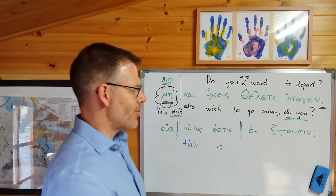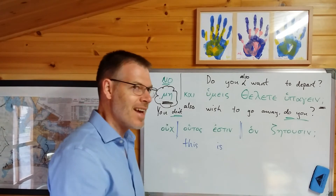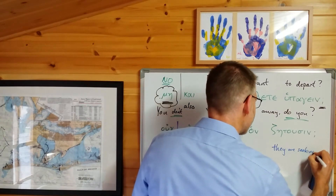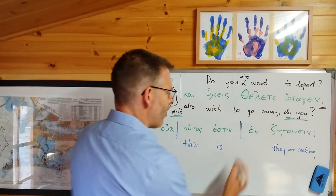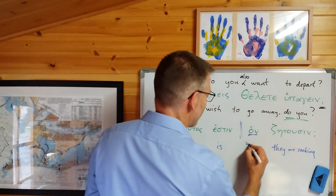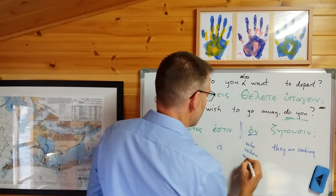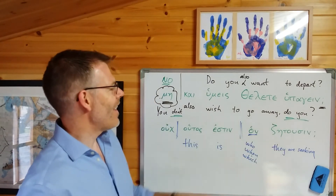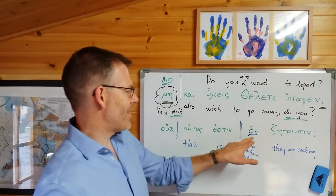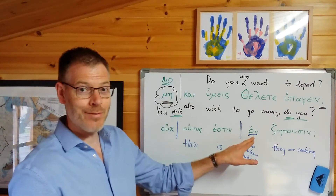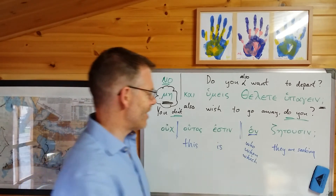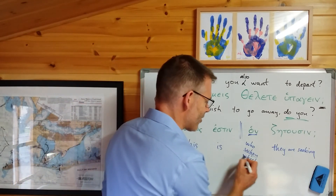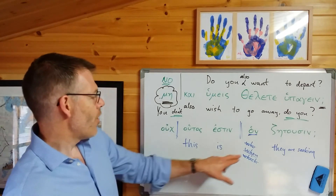Let's work through this. Zētousin is from zēteō — they are seeking. And the hon: the way we translate relative pronouns, you write who, whom, or which, and then work out how it relates to the verb. It is the object of the verb because it is accusative, masculine, singular — so it's going to be 'whom', because it's the object and we want a personal pronoun, not 'which'. So: this is whom they are seeking.